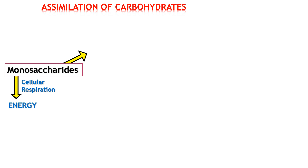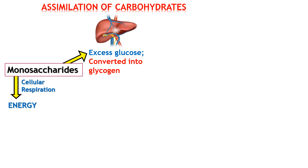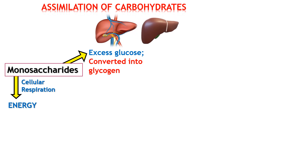The other option available in terms of utilization of carbohydrates is that monosaccharides can be converted into glycogen. When we talk about conversion into glycogen, we are talking about excess glucose. So when glucose is in excess, it can be converted into glycogen, and that is carried out in the liver. The liver is a very important organ in terms of assimilation of glucose and conversion of excess glucose into glycogen.